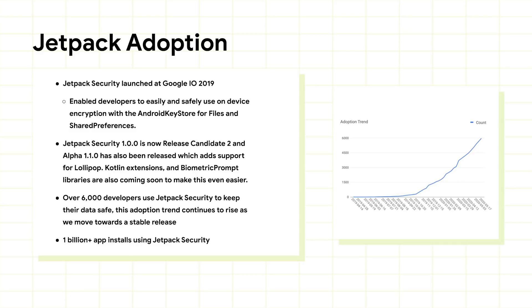Beginning Android R, developers can use the Biometric Prompt API to specify the type of authentication that an app needs for unlocking or accessing sensitive parts of the app. We will soon add this to Jetpack to make it easy for developers to incorporate Biometric Prompt into their apps. A big shout out to the Jetpack developers for landing this important library.